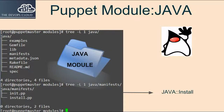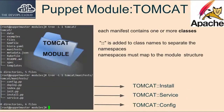Now let's take a look at what will get installed in the Java and Tomcat modules. For Java, you will have the module directory structure, and inside the module directory you will have the manifest directory which may have one or more classes. Similarly for the Tomcat module, inside the manifest directory we will have the install, service, config, and other classes.